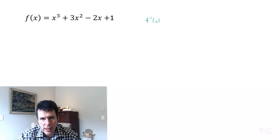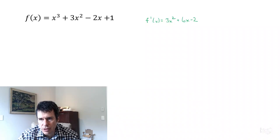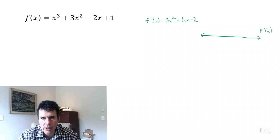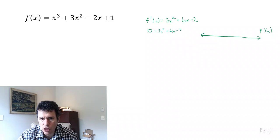So f prime of x equals 3x squared plus 6x minus 2. To create our sign chart, we need to find when this first derivative is 0. So we'll set it to 0: 0 equals 3x squared plus 6x minus 2.